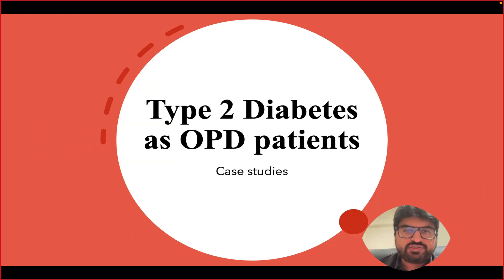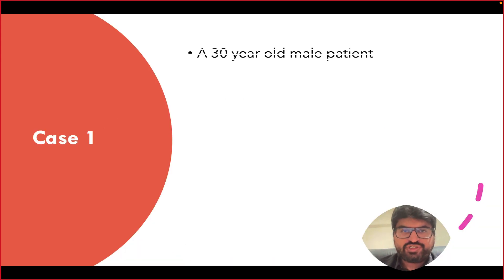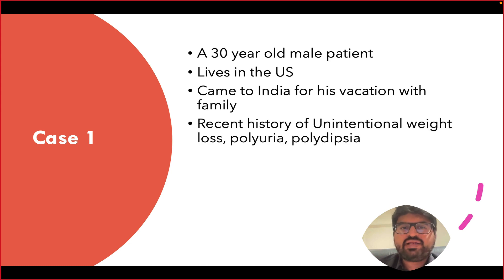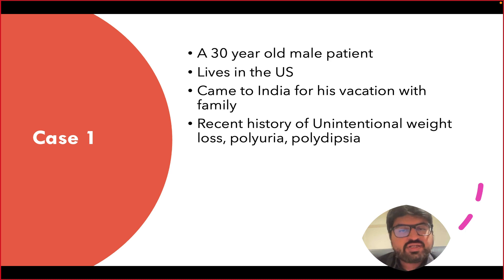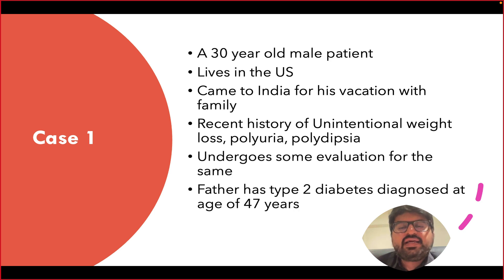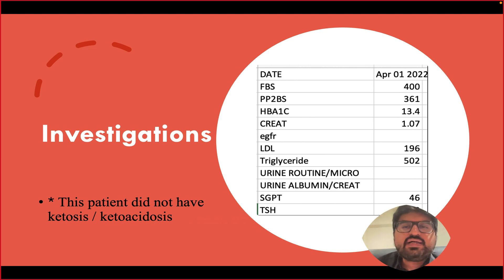Let's discuss cases to guide you on when and how to initiate insulin. This is a case of a 30-year-old male patient who lives in the US and came to India for a vacation. He had a history of unintentional weight loss, polyuria, and polydipsia — osmotic symptoms suggesting insulinopenia. He should be considered for insulin initiation.